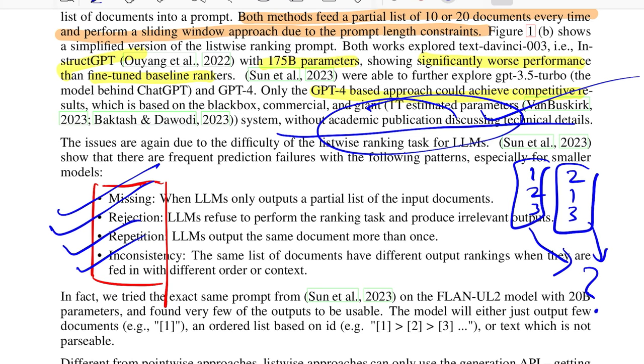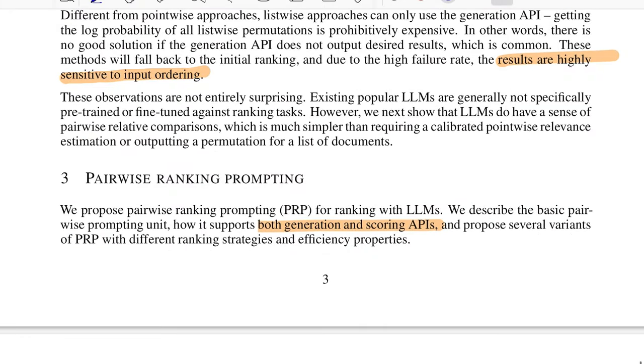With their method, which is Pairwise Ranking Prompting, they try to see if they can prove that this method works even with smaller models, which is FLAN-UL2, roughly 20 billion parameter model. Also, it doesn't go for a toss a lot if you shuffle the input ordering of the documents.